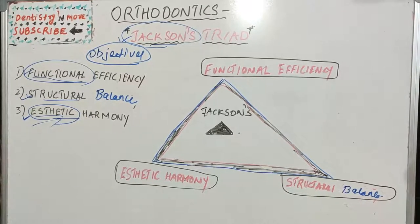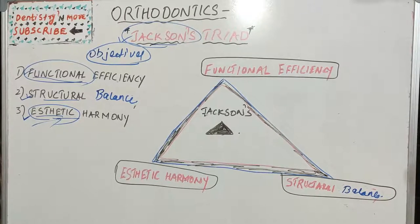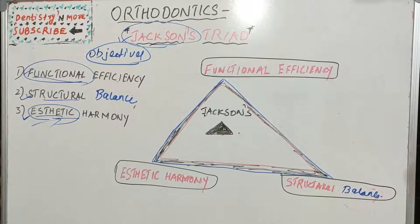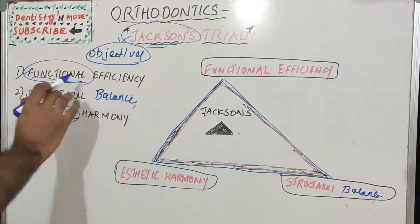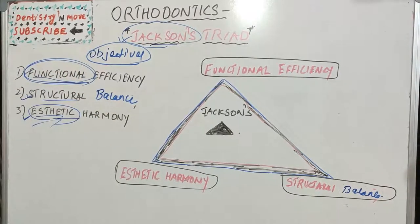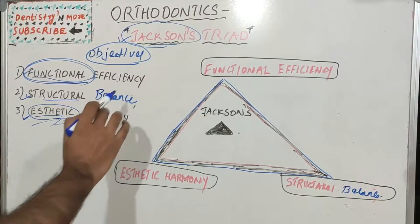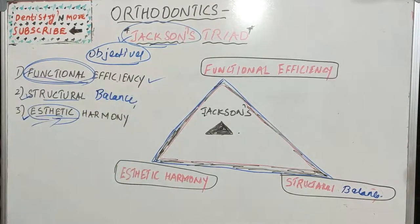The first objective is functional efficiency. Because of malocclusion, a person might experience many problems — in mastication (chewing), in phonetics (speech), in speaking certain words, or other problems like oral breathing in cases of proclined teeth. Normal functioning is not happening, so we need to correct the functional imbalance of the oral structure, which includes the teeth, bone, and muscles.